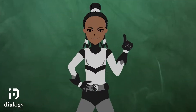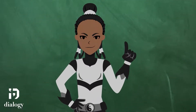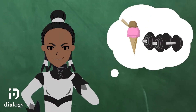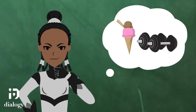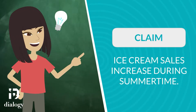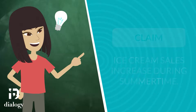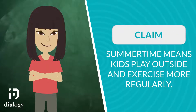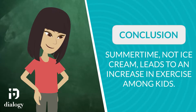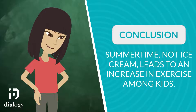However, we know that this probably wouldn't be a good idea. But how do we explain the connection between ice cream sales and exercise? The more likely cause for an increase in both ice cream sales and exercise is the coming of summer. When summer comes, kids play outside more and get more exercise, and they also eat more ice cream. This means ice cream sales do not cause more exercise, but rather that both are caused by the warming of the weather each summer.